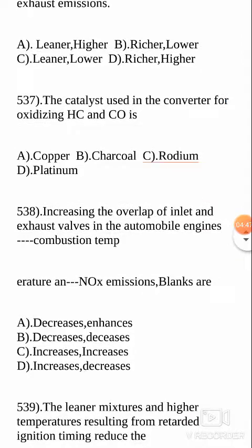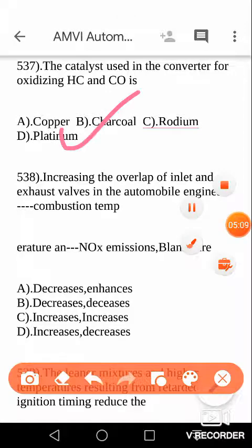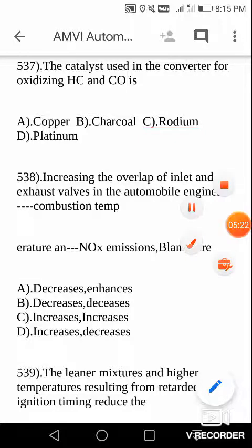Next question: The catalyst used in the converter for oxidizing HC (hydrocarbons) and CO (carbon monoxide) - what is it? The answer is platinum. Platinum is a radiometric element used as a catalyst in converters meant for oxidizing hydrocarbons and carbon monoxide.